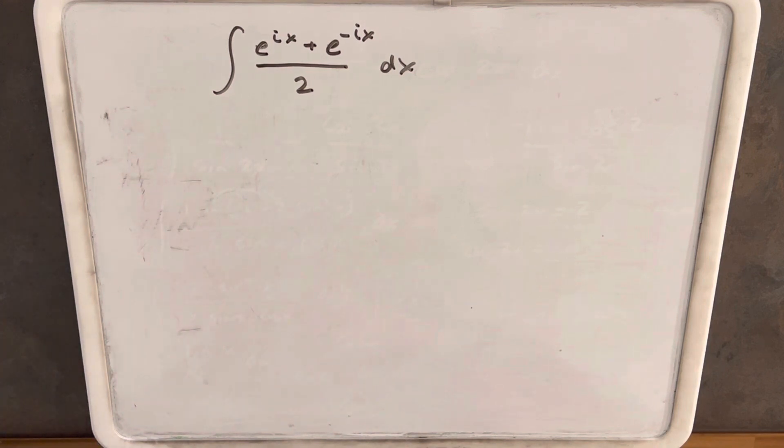Hey, we have this integral on the board. We have e to the ix plus e to the negative ix all over 2 dx.